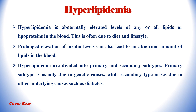Prolonged elevation of insulin levels can also lead to an abnormal amount of lipids in the blood. Hyperlipidemia is divided into primary and secondary subtypes. Primary subtype is usually due to genetic causes, while secondary subtype arises due to other underlying causes such as diabetes.